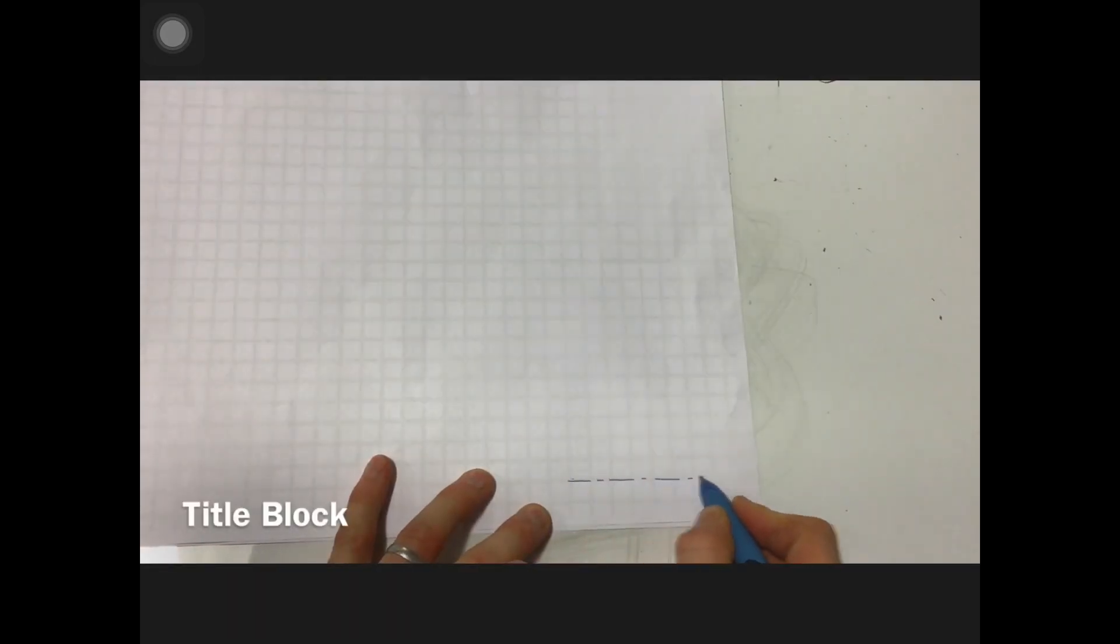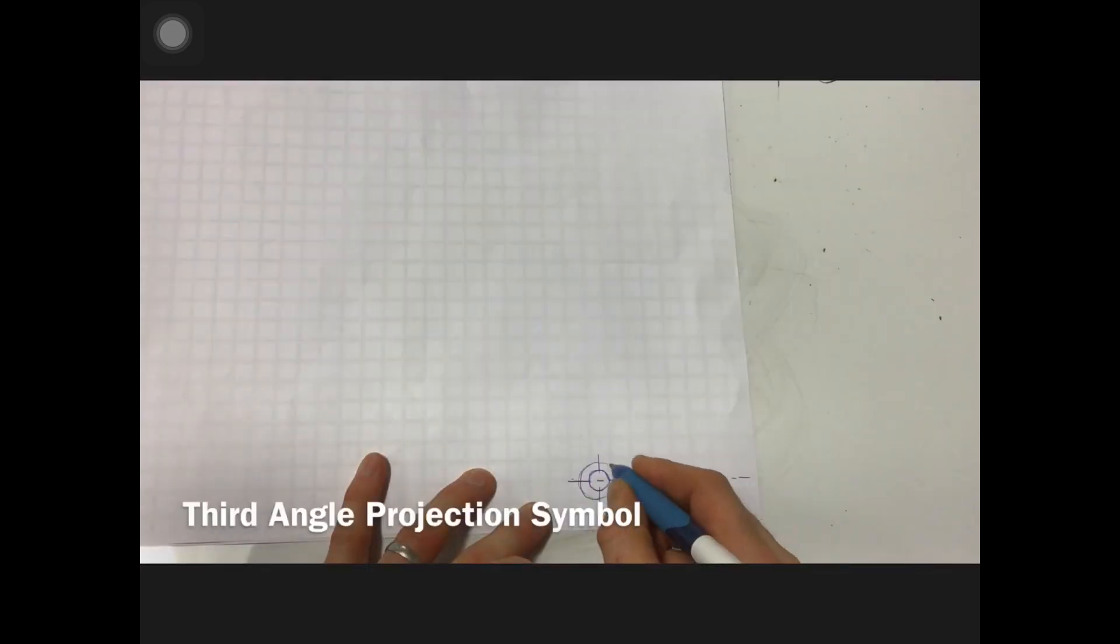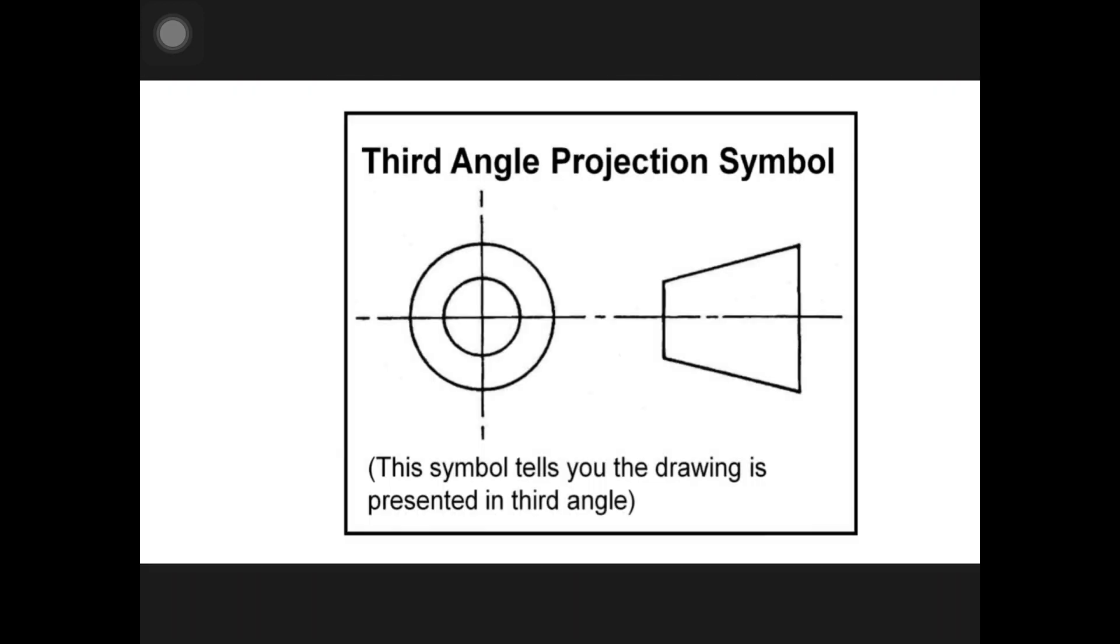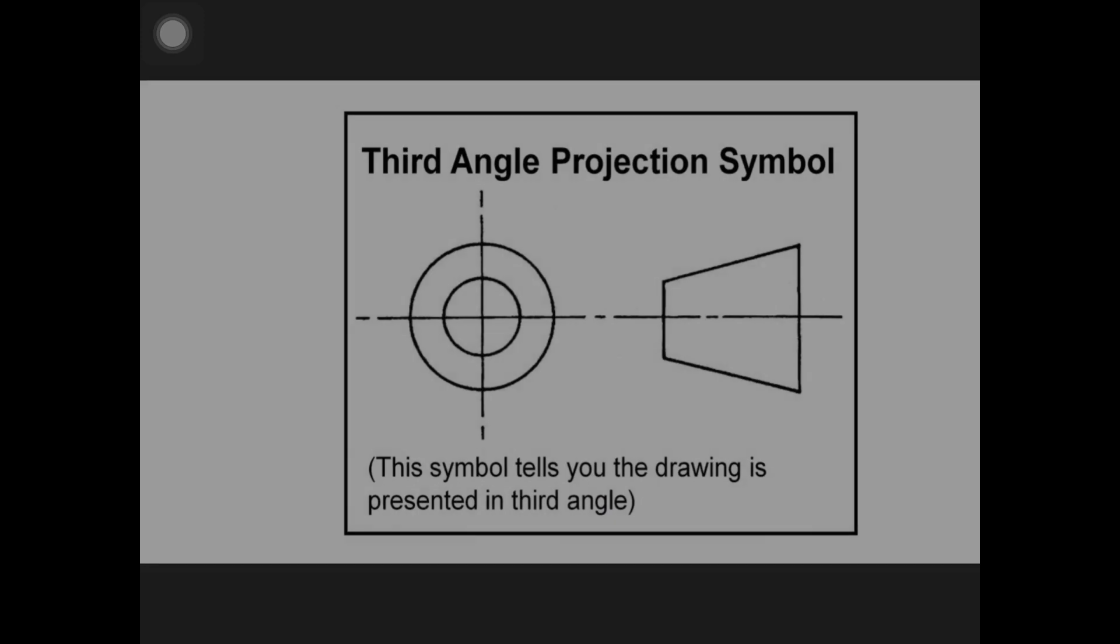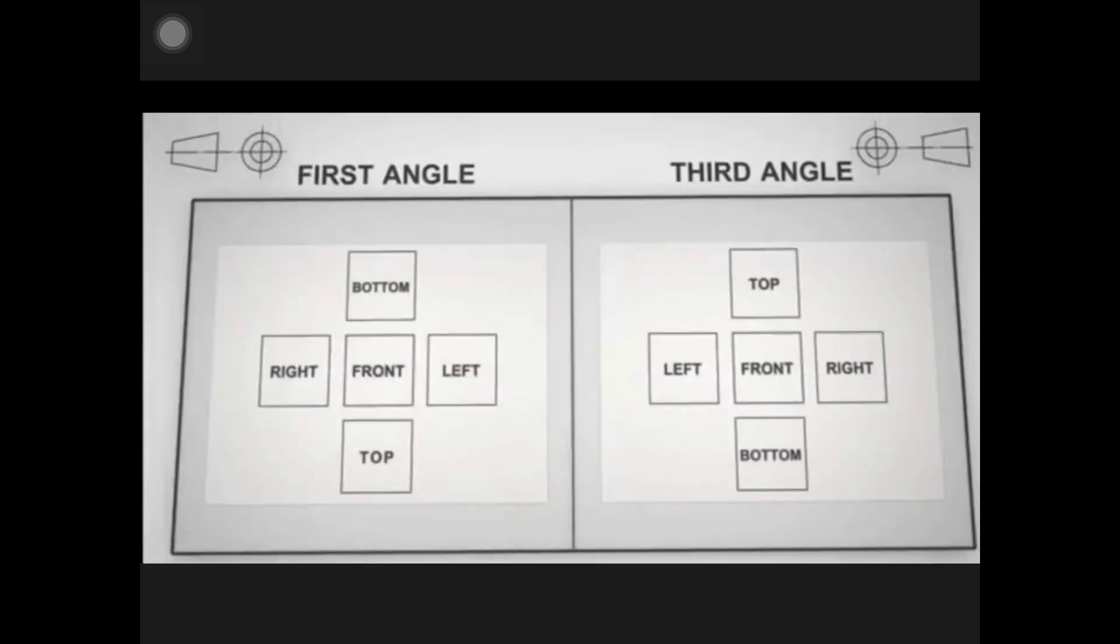I hope you're seeing by now what the standard is that's expected of everyone that is drawing from the shoulder. Good quality light lines is what's needed, so I've got my third angle projection symbol in there and I'll add in the rest of the detail.